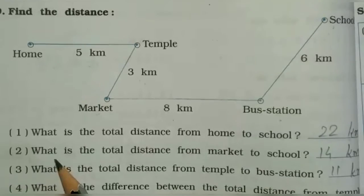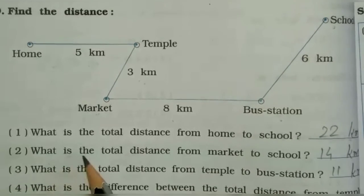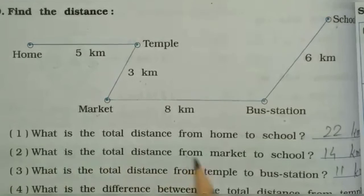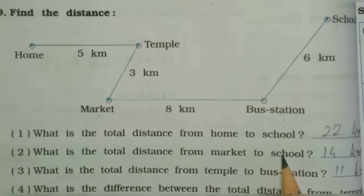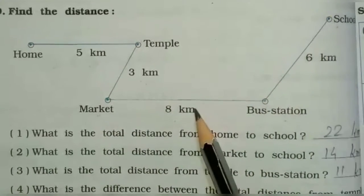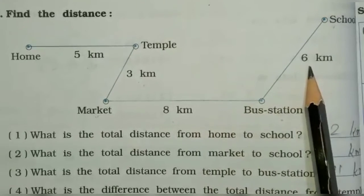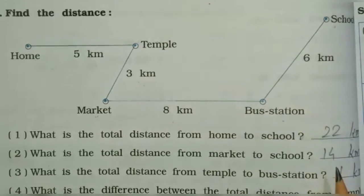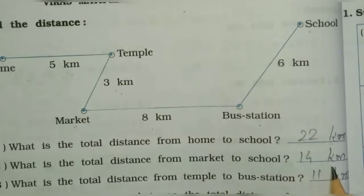Second question: what is the total distance from market to school? Market to school: 8 plus 6 is equal to 14 kilometers. Write here: 14 kilometers.